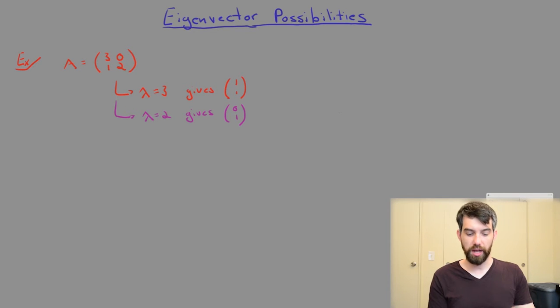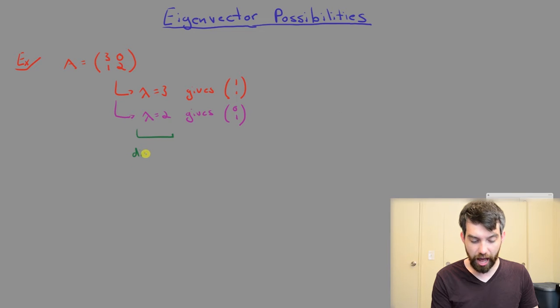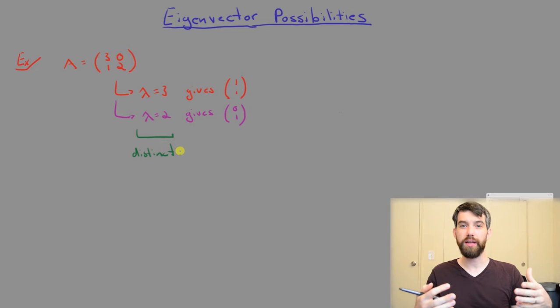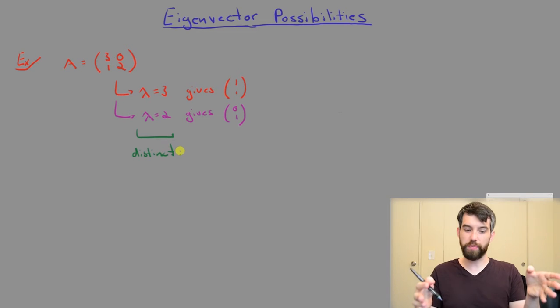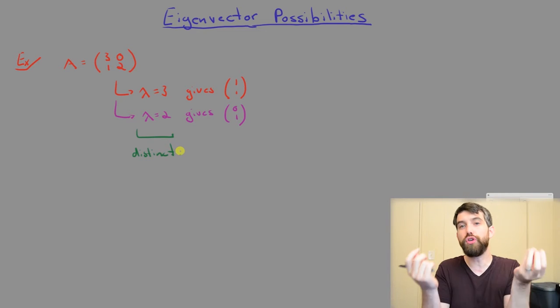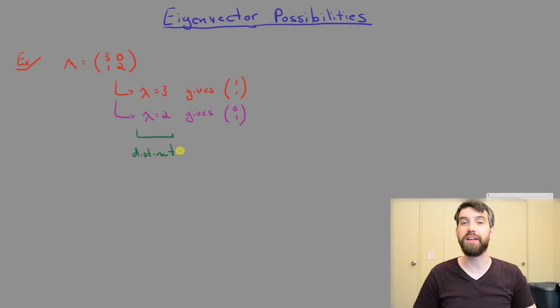Now, the key thing to point out here is that we have so-called distinct eigenvalues. When we do our computation and get our characteristic polynomial, what came out of it was two different values, and each of those two different values is associated with a single eigenvector, or at least a single family of eigenvectors we can multiply by a non-zero constant.